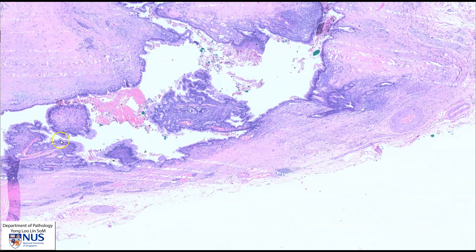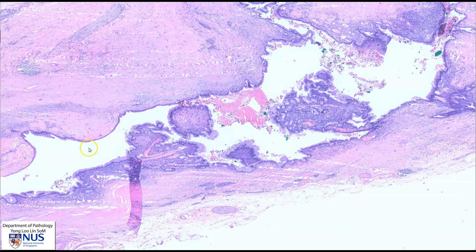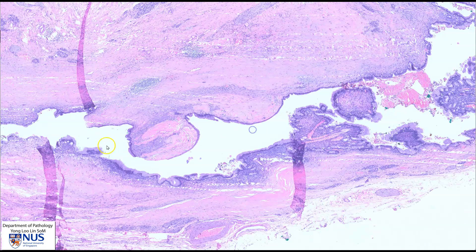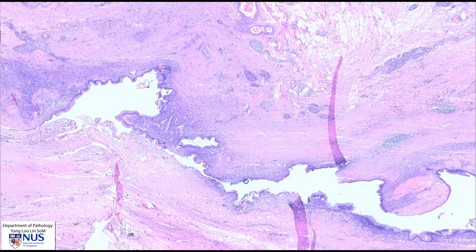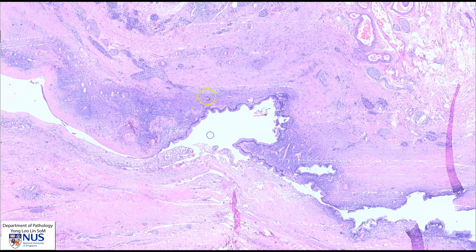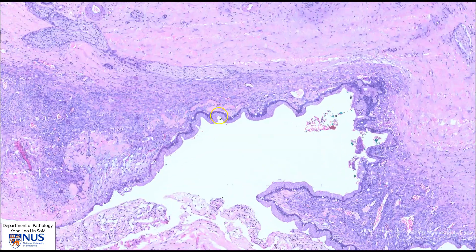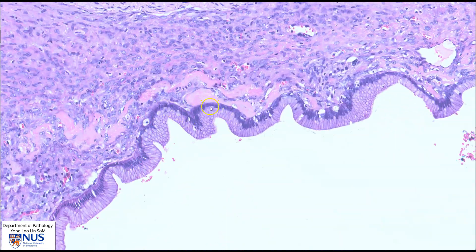Let's just move along this cyst locule. Here we can see very beautifully the low-grade mucinous epithelium and the underlying ovarian-type stroma.